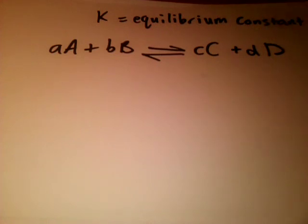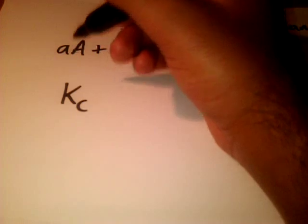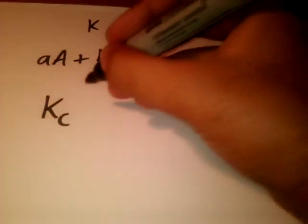When we allow this to reach equilibrium and then measure the equilibrium concentrations of everything, you combine it all into an expression called the equilibrium constant. The equilibrium constant in this case will be Kc, K being the equilibrium constant and c showing that it's in terms of concentration.